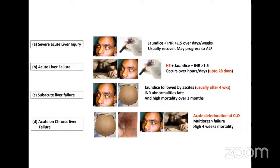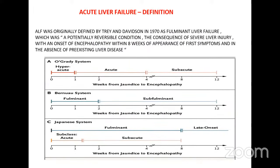Acute-on-chronic liver failure includes CLD with portal hypertension, ascites, jaundice, and hepatic encephalopathy. Acute liver failure was originally defined by Trey and Davidson in 1970 as a potentially reversible condition — a consequence of severe liver injury with onset of encephalopathy within eight weeks of the first symptoms, in the absence of pre-existing liver disease. We now follow the O'Grady system which includes hyperacute, acute, and subacute liver failure, considering jaundice as the first symptom. Hyperacute liver failure describes patients in whom encephalopathy develops within seven days of onset of jaundice.